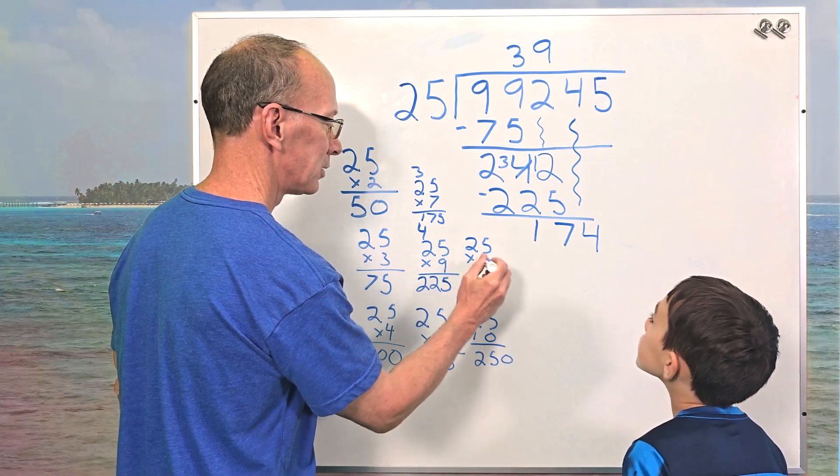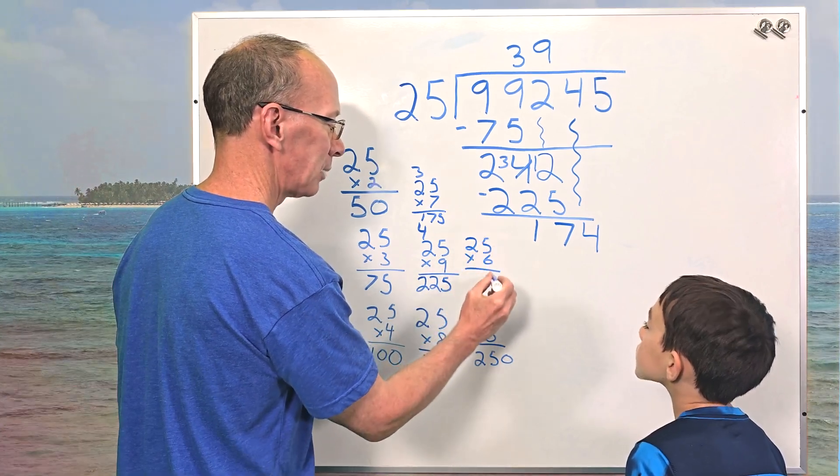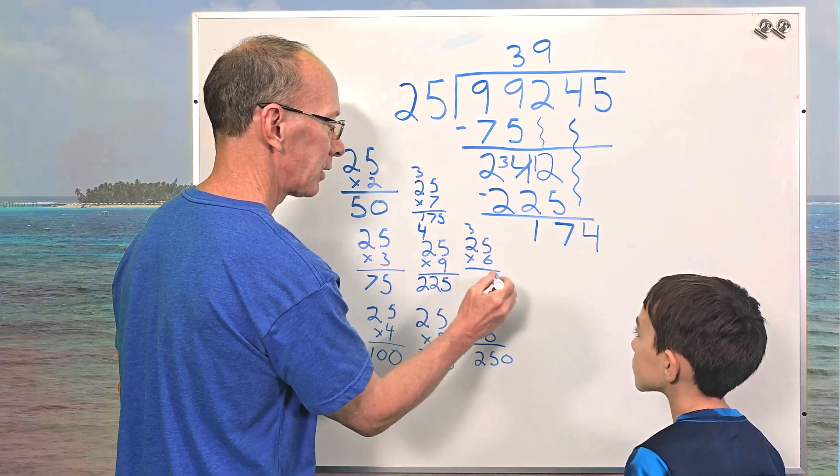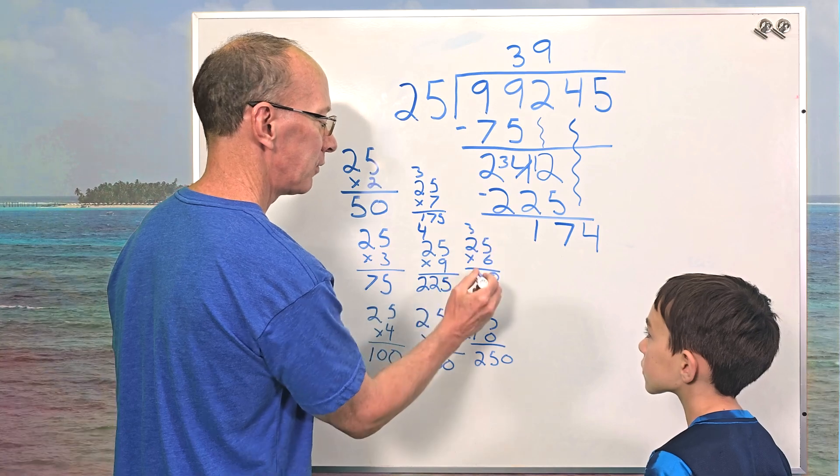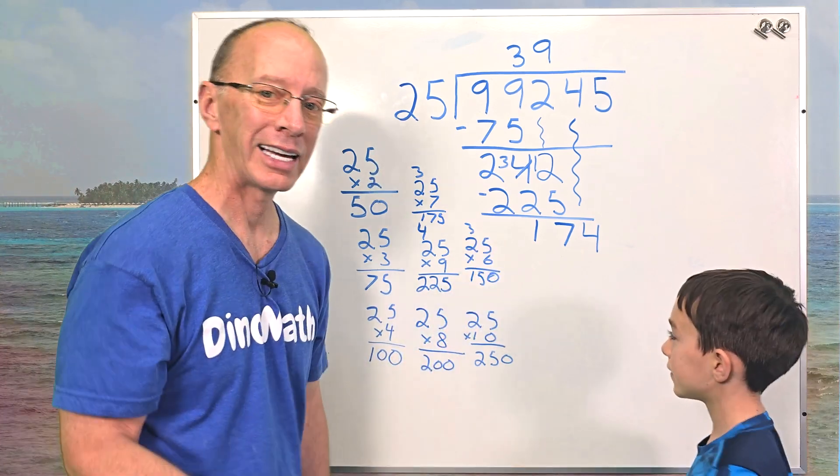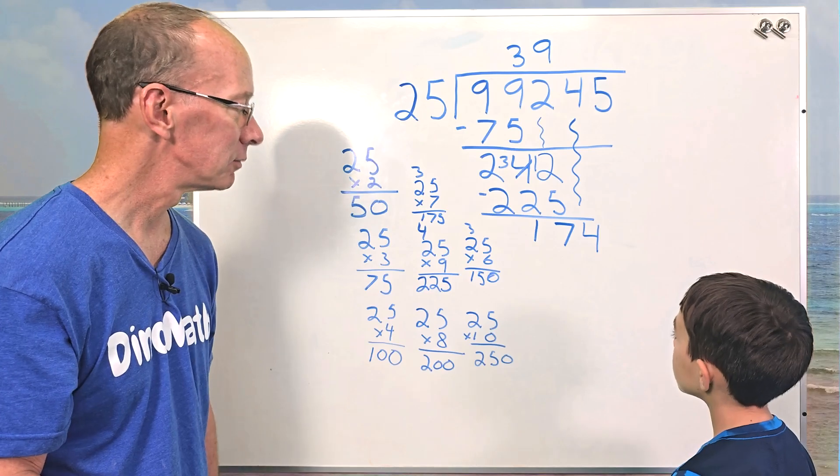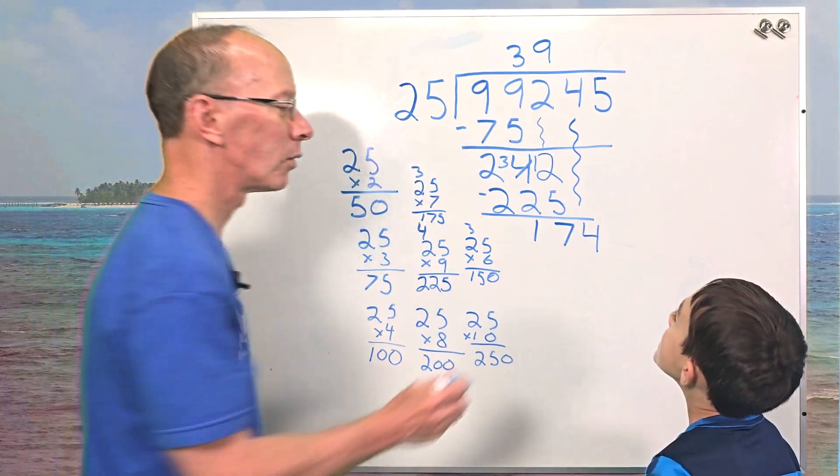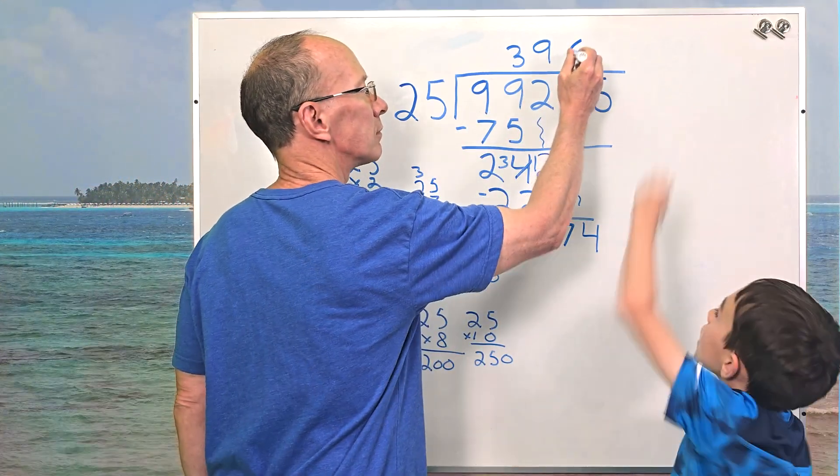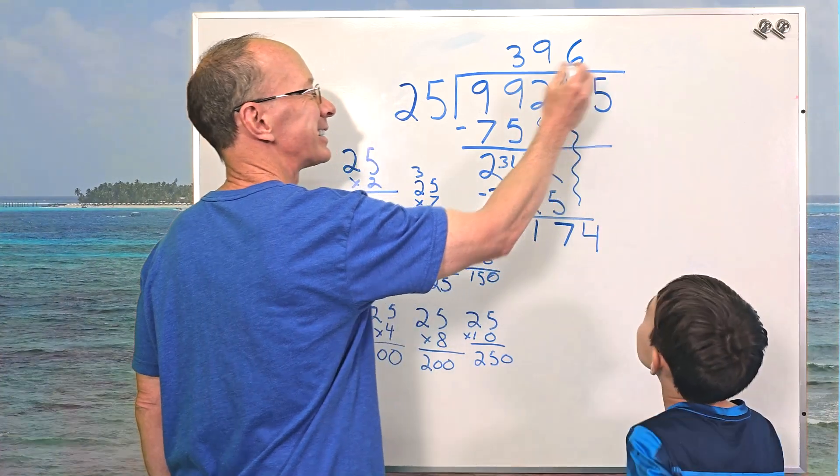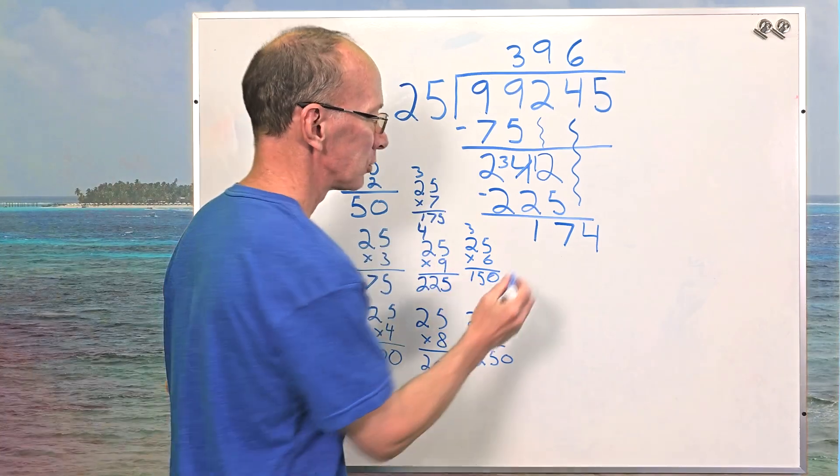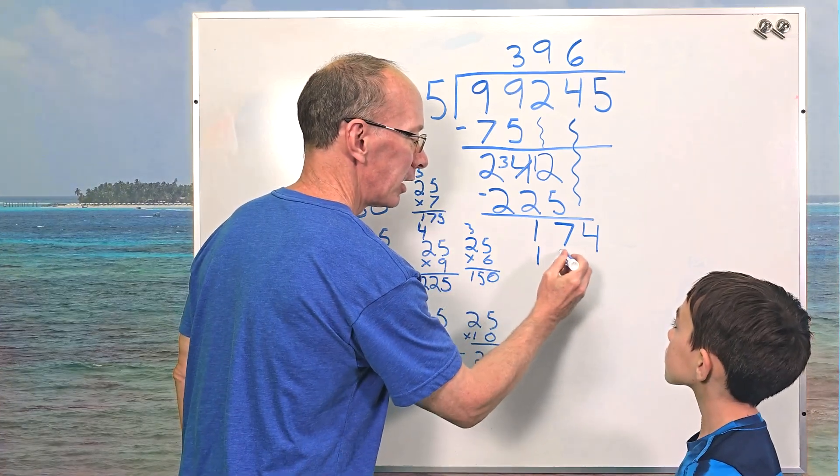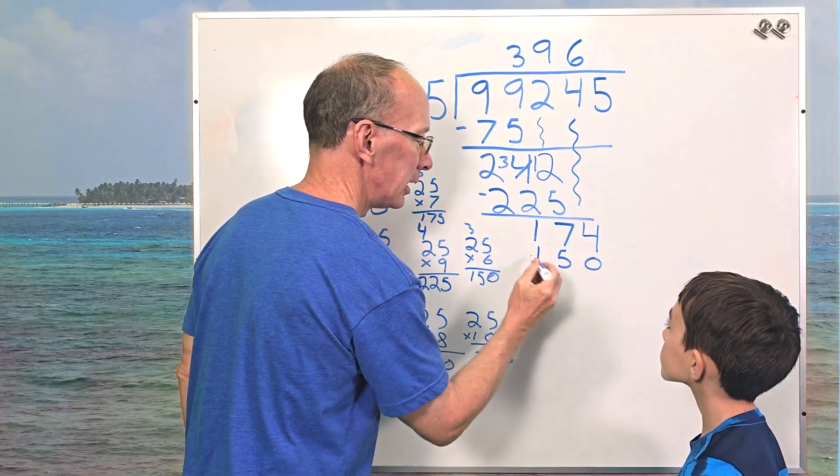We have a lot of figures all over this board here. Five times six is 30. Carry the three. That looks like a six. Six times two is 12. 13, 14, 15. 150. All right. So I'm going to put the six right above the four right here. I don't think I can reach that high. Six times 25 equals 150. So I write 150 right here. And now I subtract.